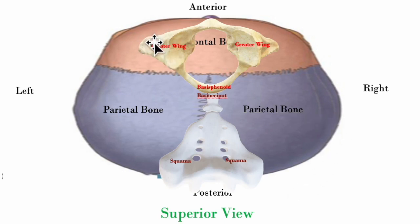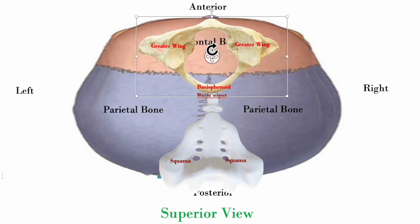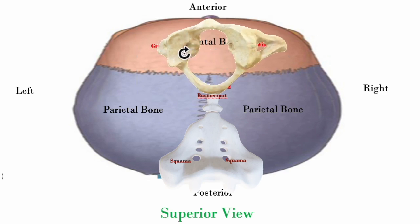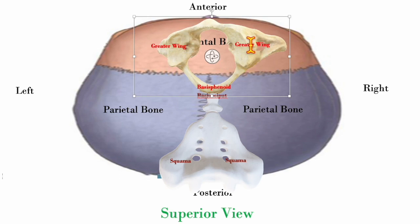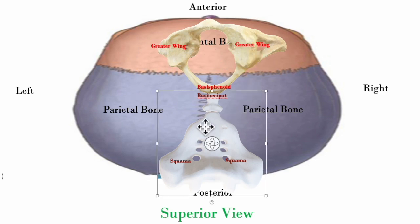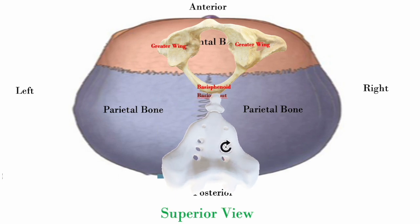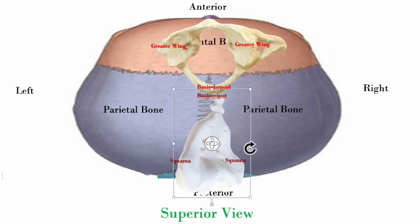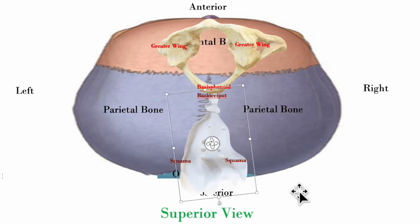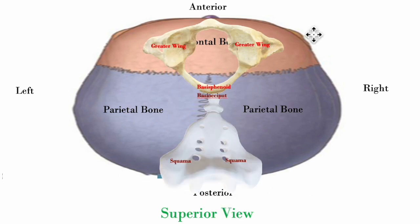What would cause a torsion? If someone gets hit on the top of their head on the left side — force moving from superior to inferior — it causes the left greater wing to move inferiorly, which causes the right greater wing to become superior. The occiput compensates, resulting in a right torsion.